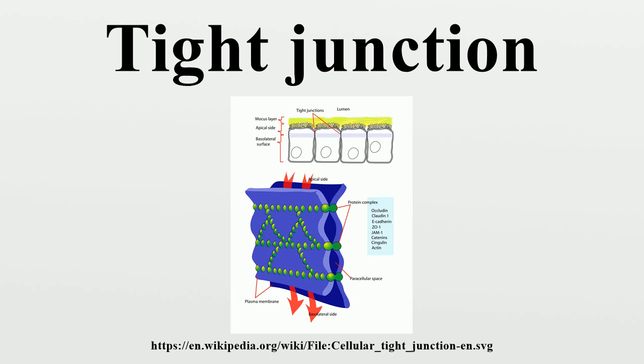The constrained intracellular pathway exacted by the tight junction barrier system allows precise control over which substances can pass through a particular tissue.